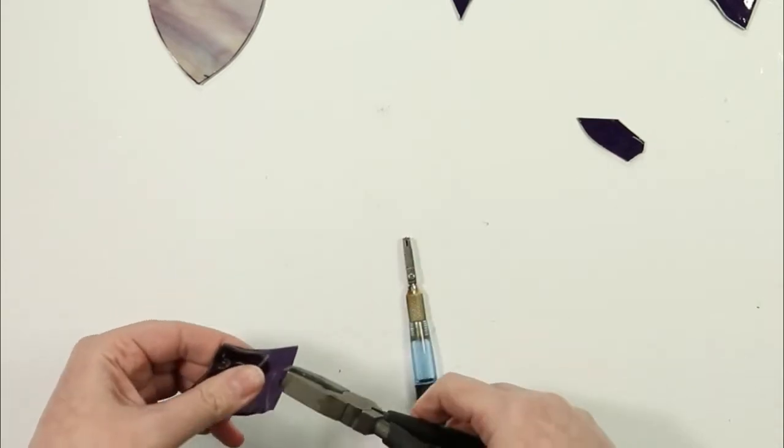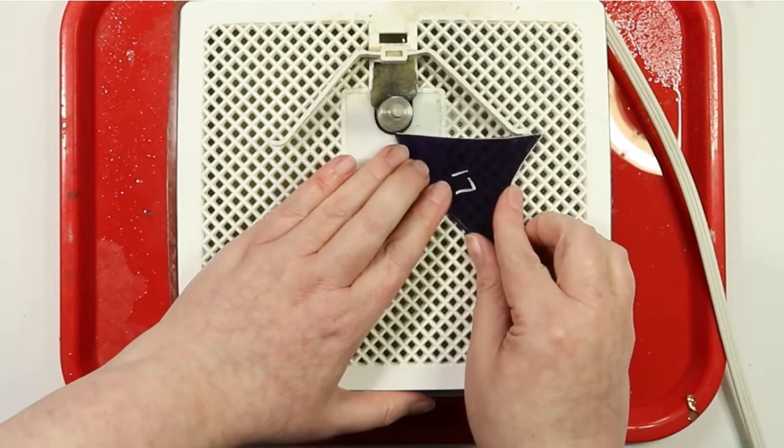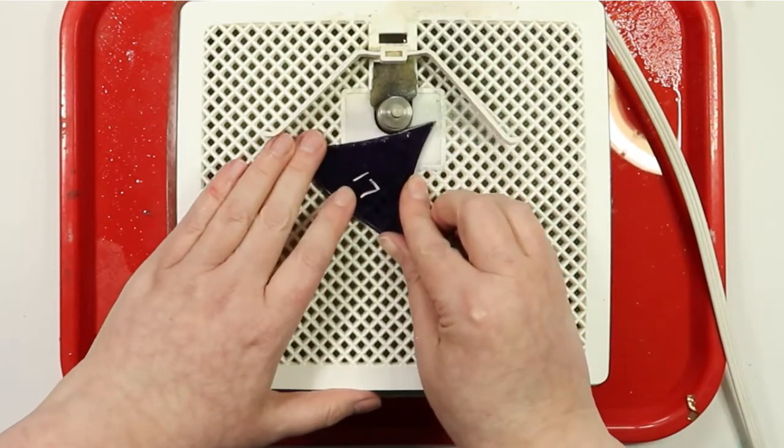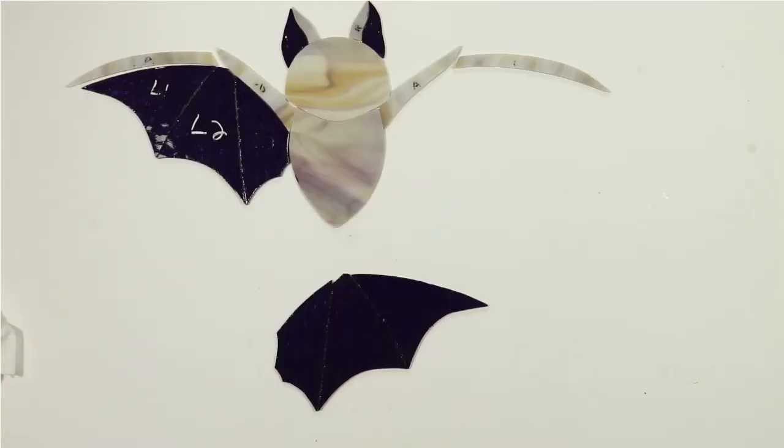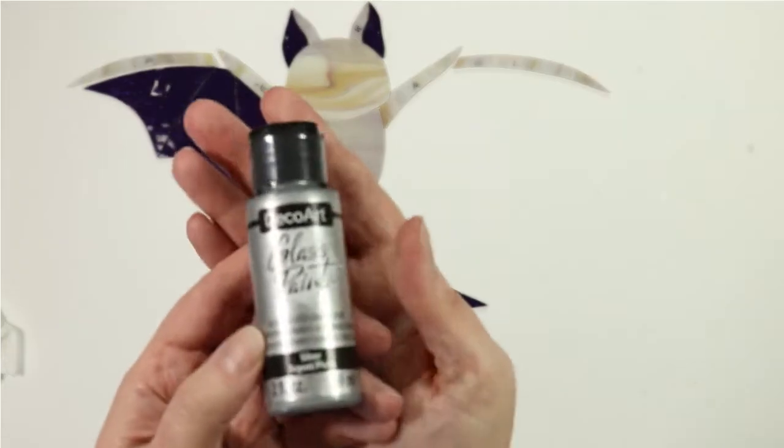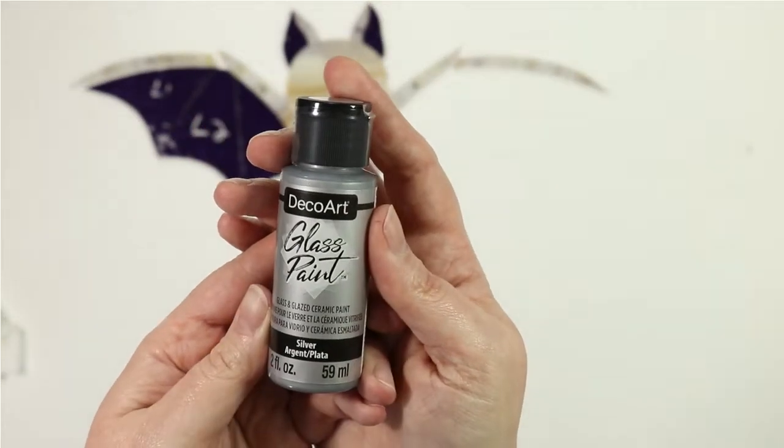Now in this video I'm going to be sharing with you the next couple of steps in the process of making the stained glass bat. We're going to start with the grinding process and then we're going to talk about adding paint to your stained glass projects using craft paints.